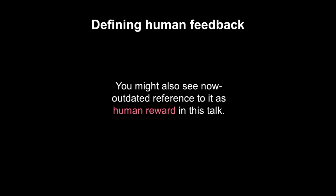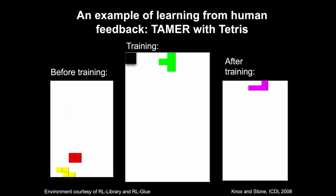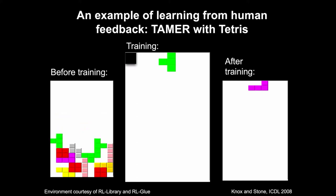I'll also briefly note I used to call this "human reward." That specific terminology didn't catch on, and I might accidentally refer to it as that — at least one diagram has it written that way. To give a sense of what learning from explicit human feedback looks like, here's a Tetris agent acting randomly, just randomly choosing piece placements.